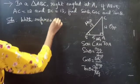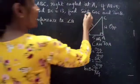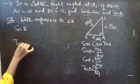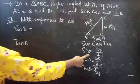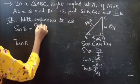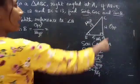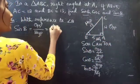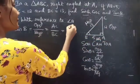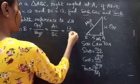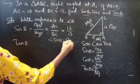With reference to angle B we can find sine B and tan B. Using SOH, sine theta equals opposite by hypotenuse. With reference to angle B, the opposite side is AC and the hypotenuse is BC. We have AC equals 12 and BC equals 13, so sine B equals 12 by 13.